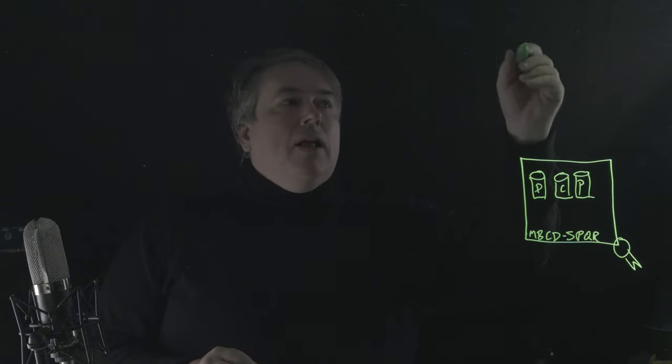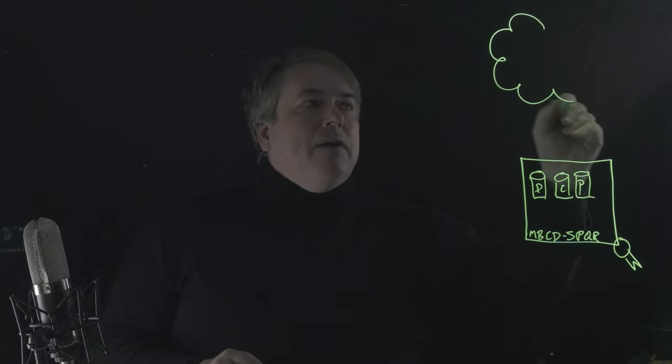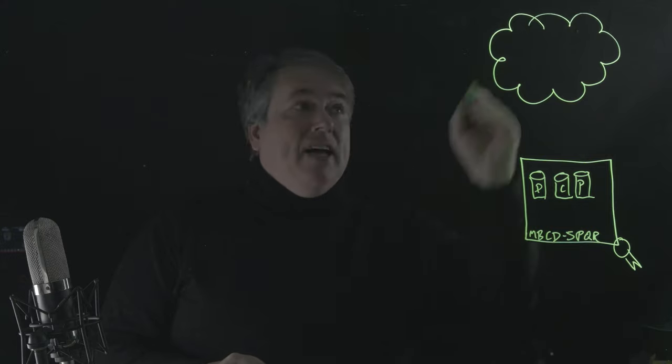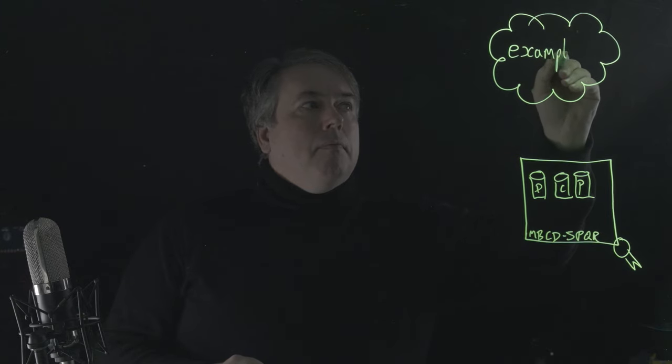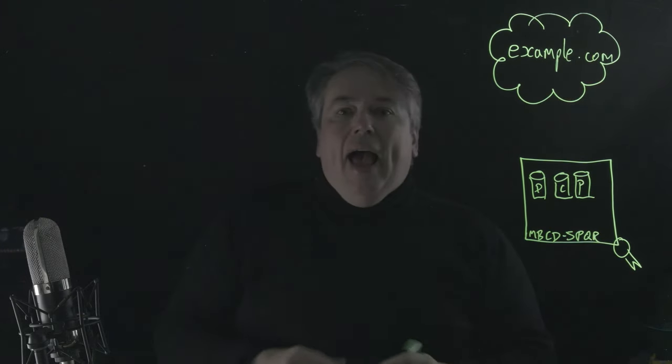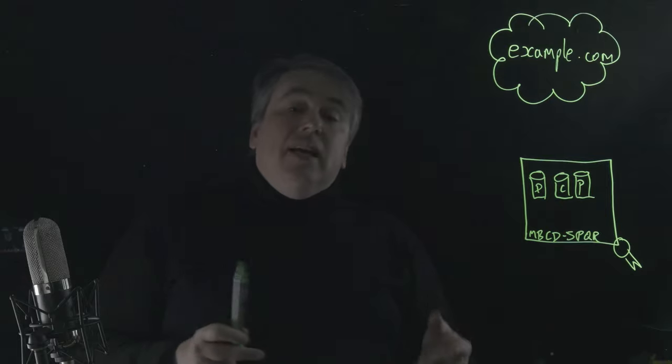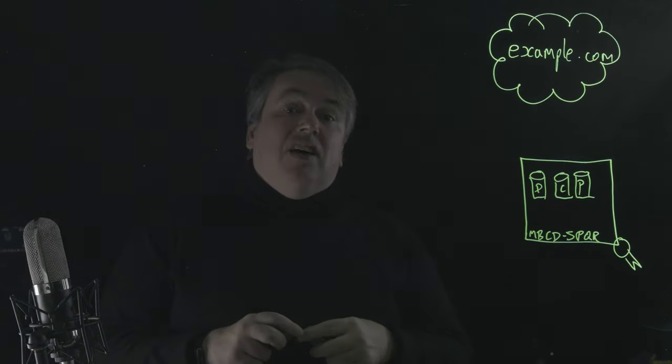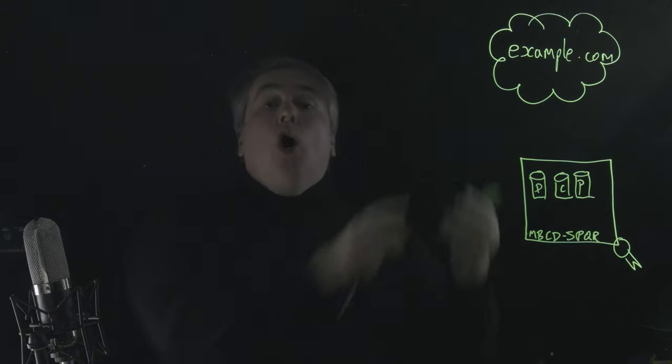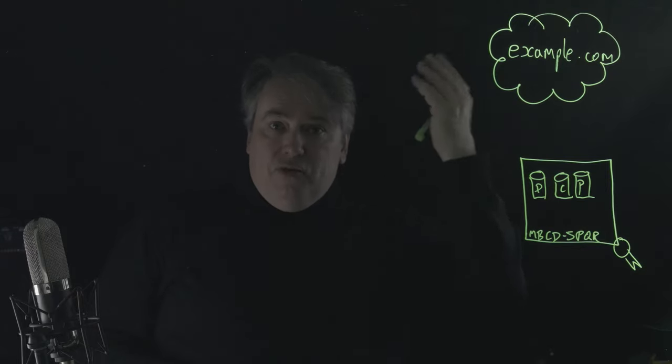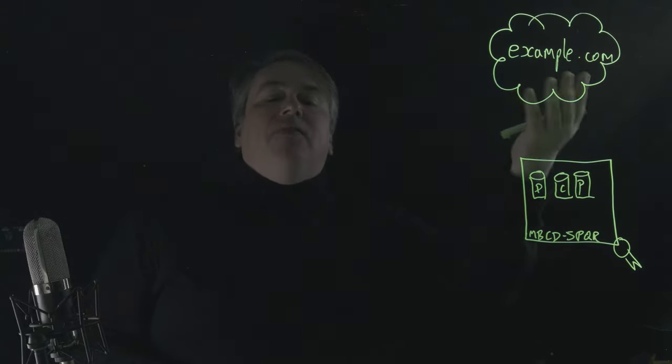So where does the service come in? Well, Alice binds her account to a service. This service will have a DNS address, so it's going to be called example.com. Alice's client finds this service using the internet mechanism designed for discovering services, the DNS. All the information required to find that service with redundancy and reliability should all be in the DNS.